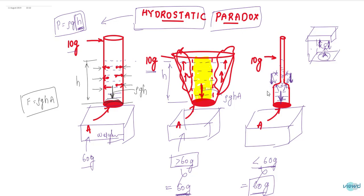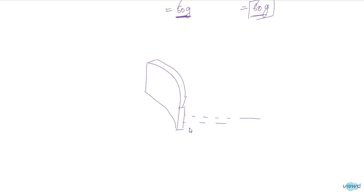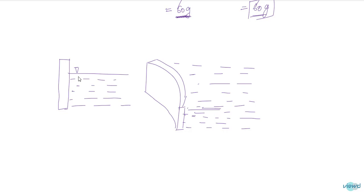So this is called the hydrostatic paradox. Now let us take another example. Suppose there is a dam, and water is present up to a certain level. Taking a 2D view — water is present up to this level.